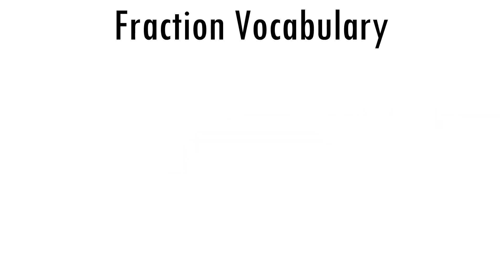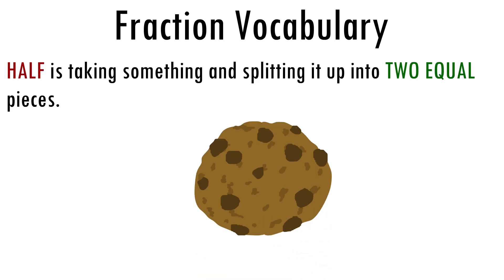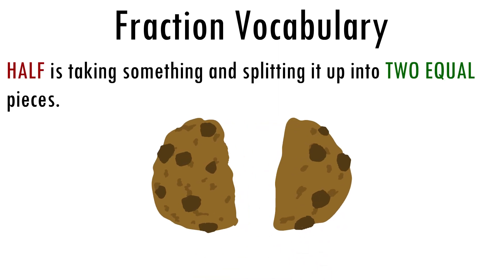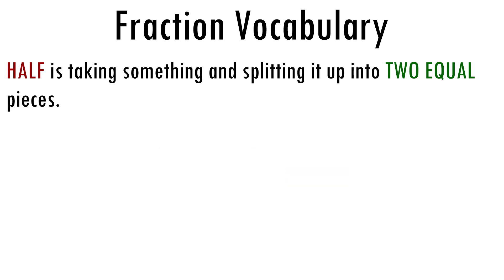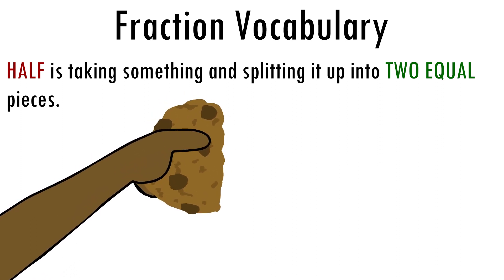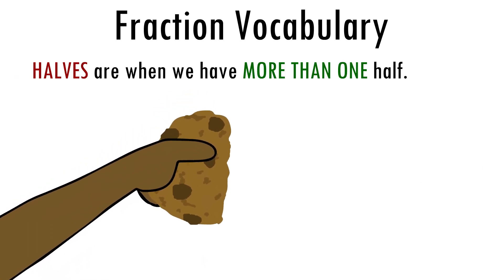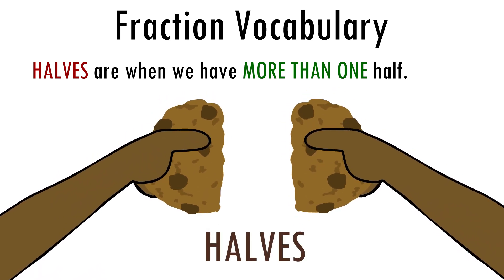Okay, so what about half? Half means that we are taking something and splitting it into two equal pieces. If I were to take one of the pieces, I would be taking half. Anytime you have one half piece, you have a half. Anytime you have more than one half piece, you have halves.